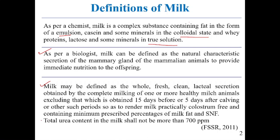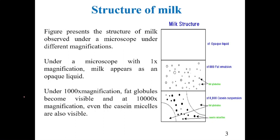Looking at the structure of milk: if we observe milk under a microscope with no magnification it appears as an opaque liquid. Under 1000 times magnification, fat globules become visible. This figure shows 1000 times magnification, where fat globules are visible, ranging in size from 0.1 to 22 microns.